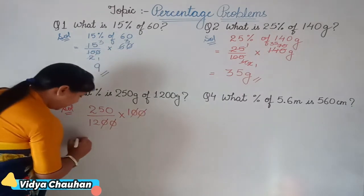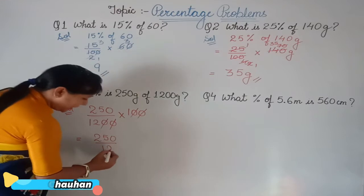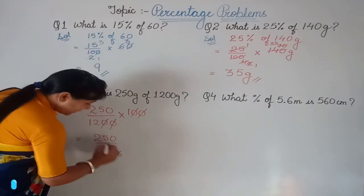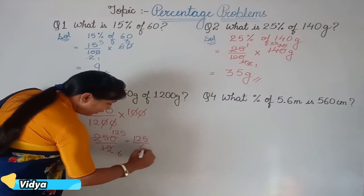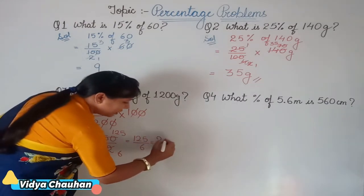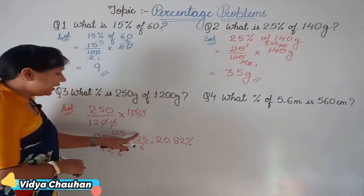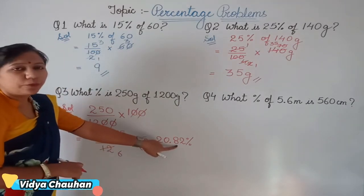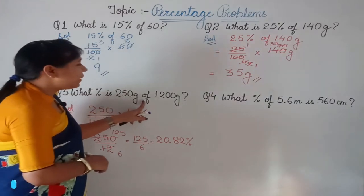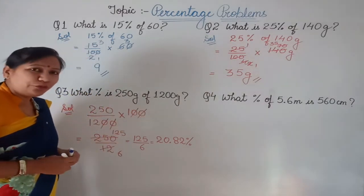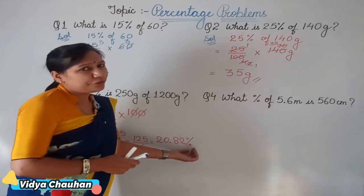The zeros cancel, leaving 250 upon 12. Simplifying by 2 gives 125 upon 6. Dividing this out gives 20.83 percent. You can leave it in fraction form or convert to decimal. So 250 grams is 20.83 percent of 1200 grams — if we take out 250 grams from 1200 grams, it is approximately 20.83 percent.